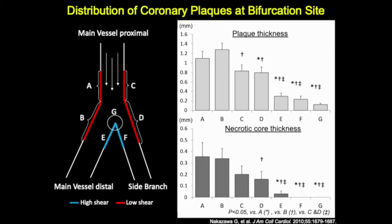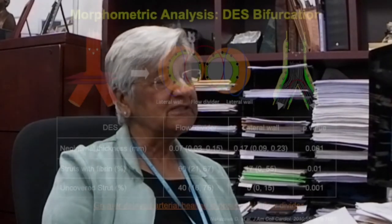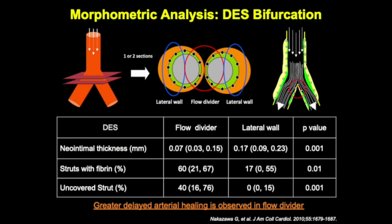When stents are deployed in these regions, we have shown that where stents are more likely to form thrombosis is where neo-intimal thickness is least — in the floor divider region as compared to lateral. Struts with fibrin are more likely to be seen at the bifurcation floor divider rather than at the lateral wall. Uncovered struts are more commonly seen at the carina compared to the lateral wall — that is, the floor dividers.